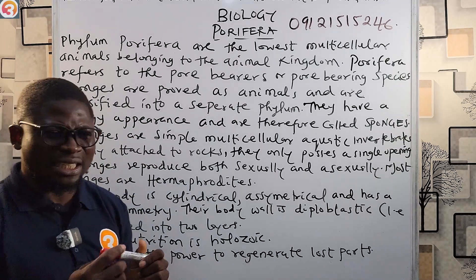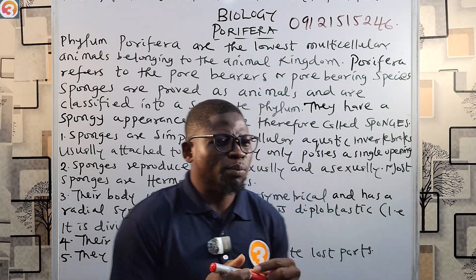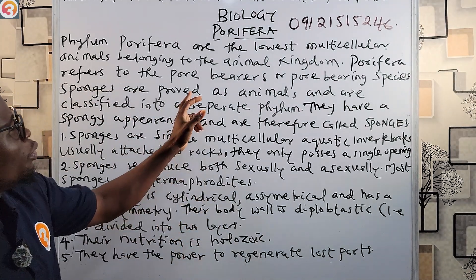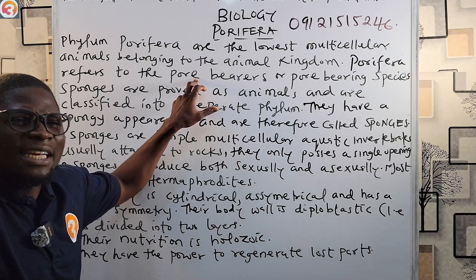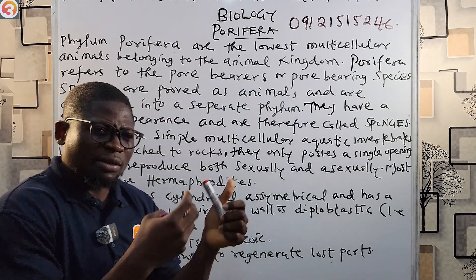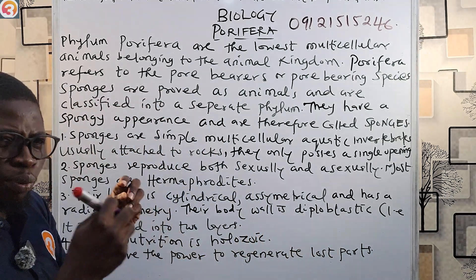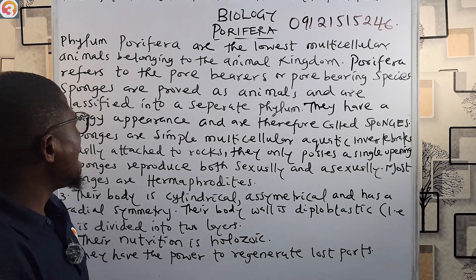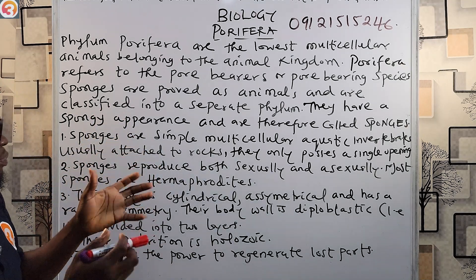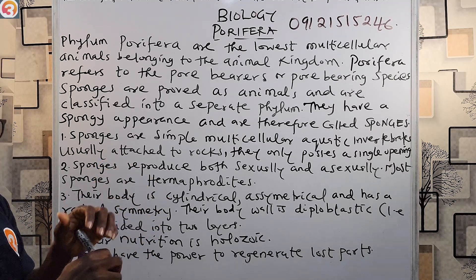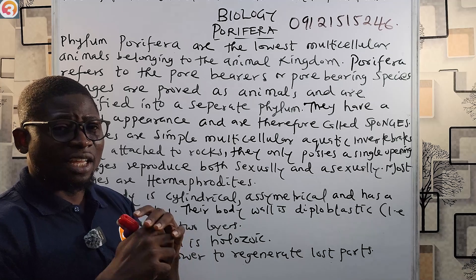Porifera are characterized by a porous body — that's how they earn the name pore-bearers or pore-bearing species. They are equipped with canals or chambers for the flow of water through their body. Sponges are proven to be animals and are classified into a separate phylum. Previously grouped under the plant kingdom, they have now been given their own separate phylum under the animal kingdom.